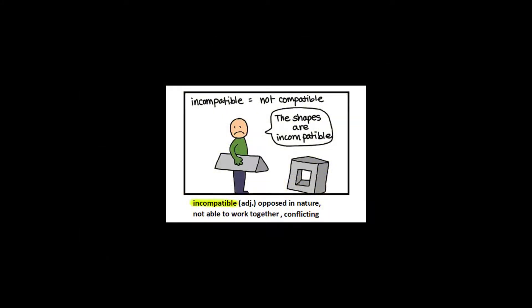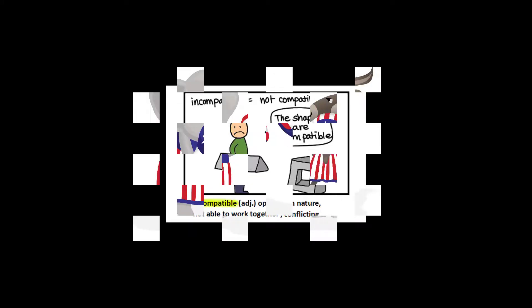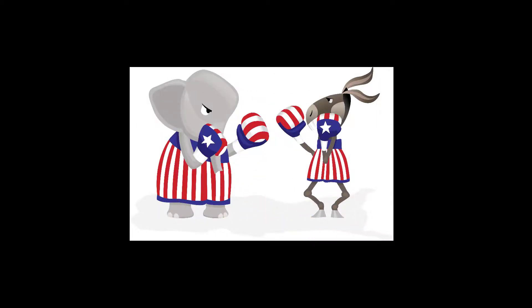Functionalism and conflict theory are not compatible as analytical models, since they have very different premises and reach different conclusions. Sociologists will be one or the other, not both. The same is true politically: Republicans tend to be functionalists and Democrats tend to be conflict theorists. It is why the two political parties have very different views of social problems and different solutions for how to fix those problems.